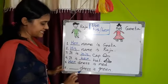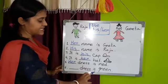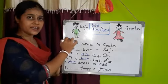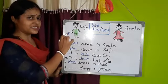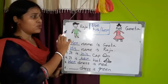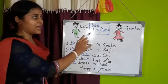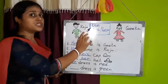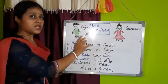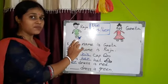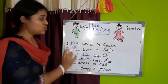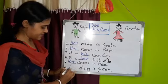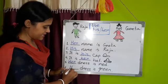Number six. His dress is green. Whose dress is green? Yes, Raju's dress is green. And we have to write his or her. Raju — we use his in place of boy. So write here: his dress is green.